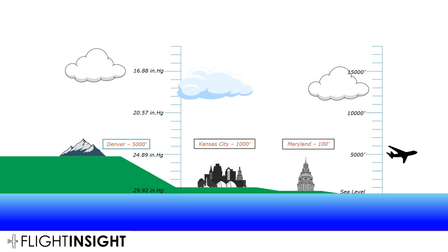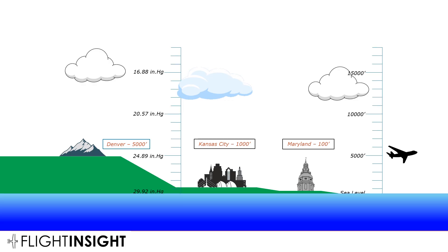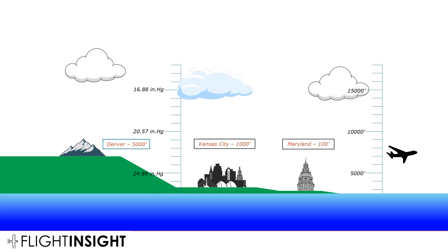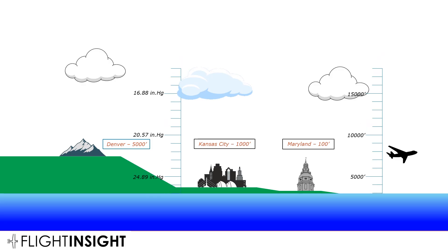Of course, we're not in fantasy land or the standard datum plane. If the actual sea level pressure is lower, the aircraft will perform worse. So instead of a pressure altitude of 5,000, maybe it's now 8,000. Our aircraft will perform as if it were at 8,000 feet in fantasy land. And of course, air pressure isn't the only factor in performance — temperature matters too.